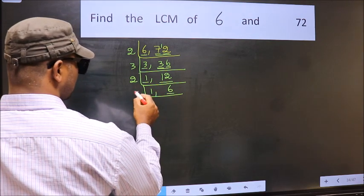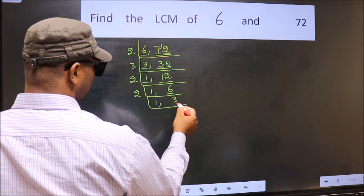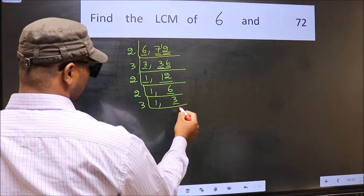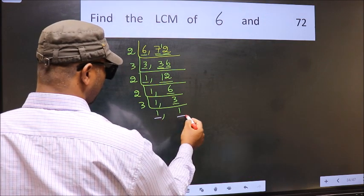Now we have 6. 6 is 2 times 3. Now we have 3. 3 is a prime number, so 3 times 1 is 3. We got 1 in both places.